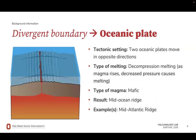Divergent boundaries between oceanic plates cause mid-ocean ridges. At mid-ocean ridges, molten material moves up through underwater volcanic mountain chains across our planet. This magma, which also results from decompression melting, is mafic in composition. An example of this setting would be the Mid-Atlantic Ridge.